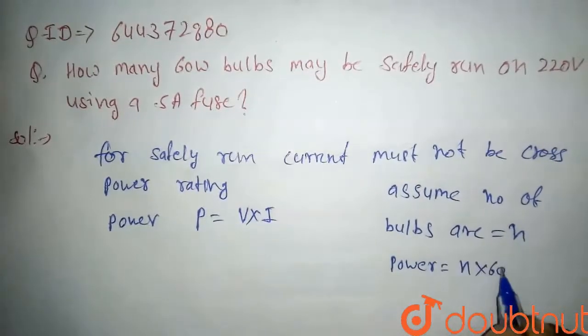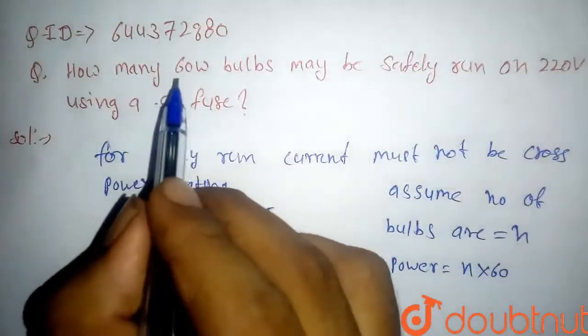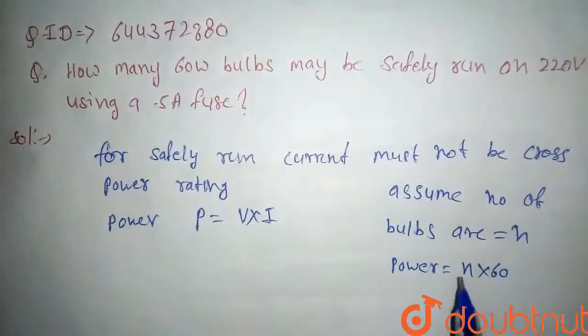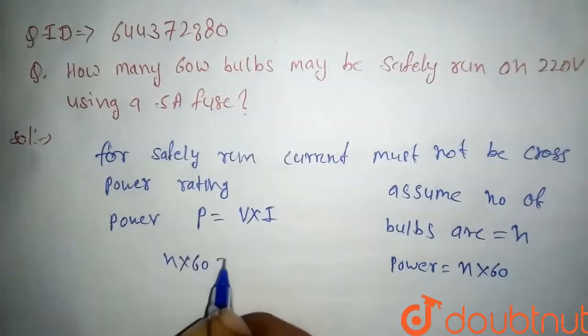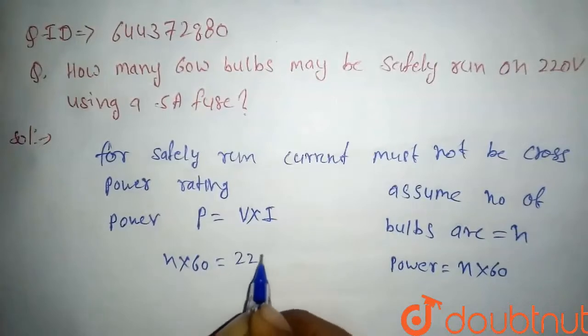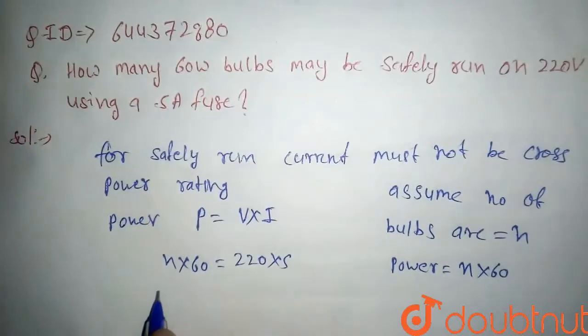n into 60, because for one bulb it's 60 watt, so for n bulbs it will be n × 60. So here, put the value: n × 60 must be equal to 220 × 5. If we solve,